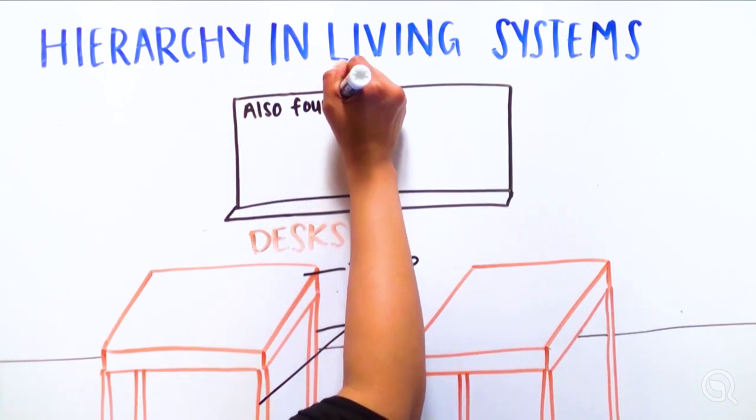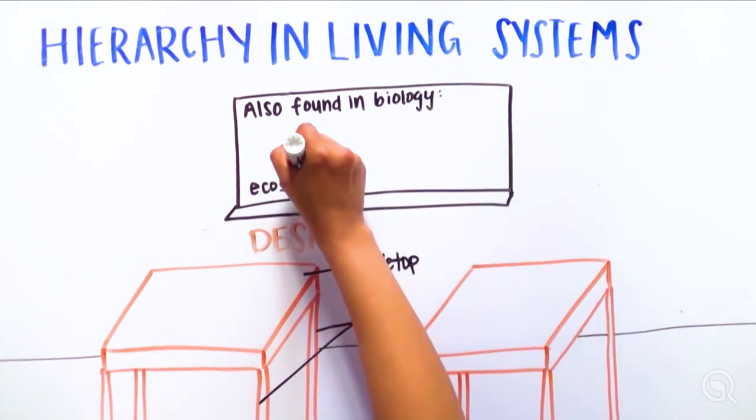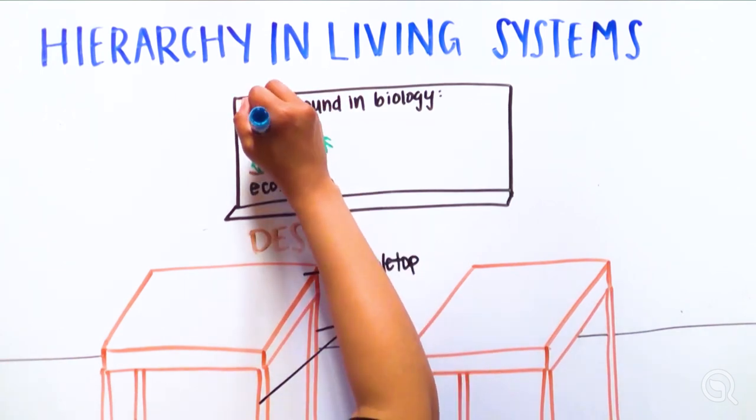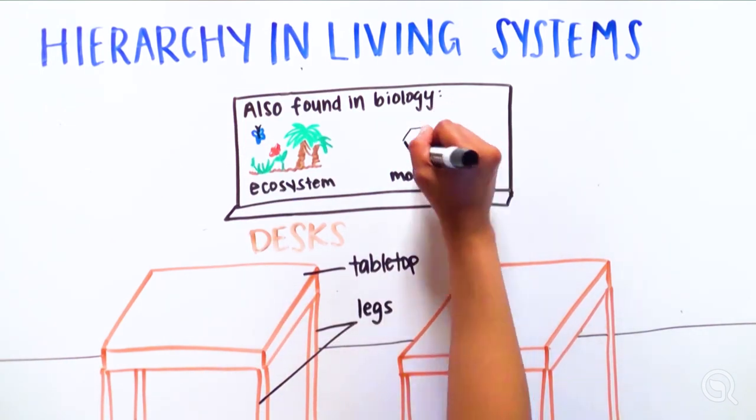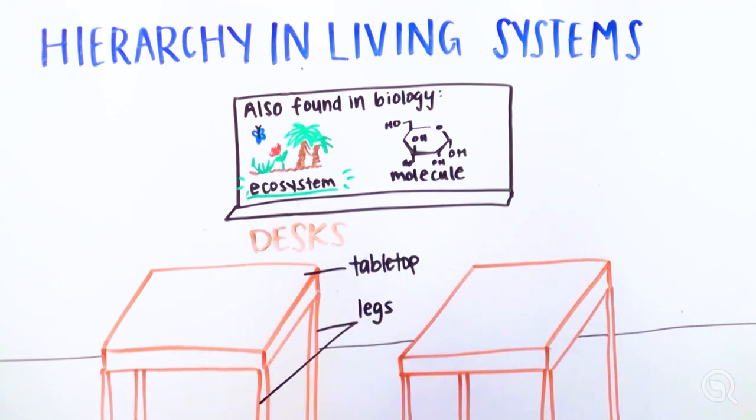This hierarchy is also found in biology. From an ecosystem to a molecule, life contains basic units of structure and function, which is essential to understand how a system works.